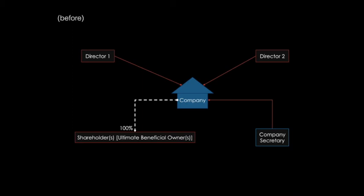As corporate structures have changed, understanding a customer's business is no longer black and white — there is a huge grey area that experienced due diligence officers must navigate. The problem has been exacerbated by independent companies willing to place layers of corporate levels between the beneficial owner and their companies as a paid service. These complex ownership trails cross geographical and legal boundaries, allowing criminals to obscure the real identities of those who ultimately benefit from the financial transactions.